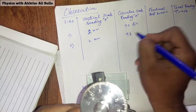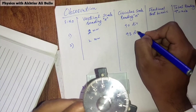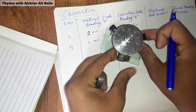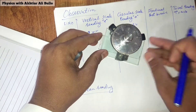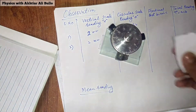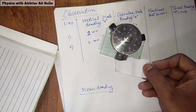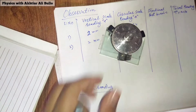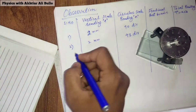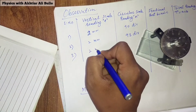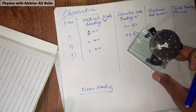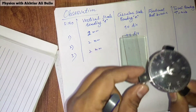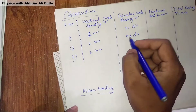The second reading of the circular scale is 93 divisions. For the third reading, we will check that the paper is not passing through the legs of the spherometer. The vertical scale reading remains two millimeters, but the circular scale reading changes and we have obtained 95 divisions, so we will write 95 divisions.